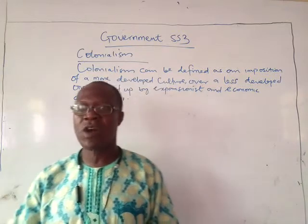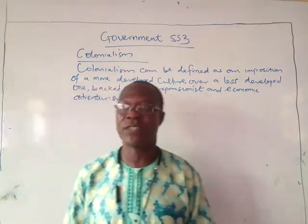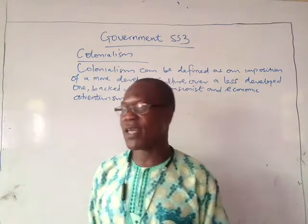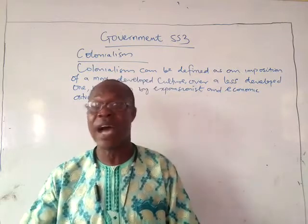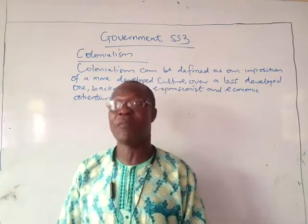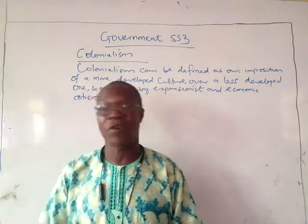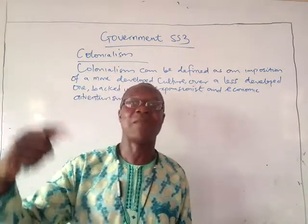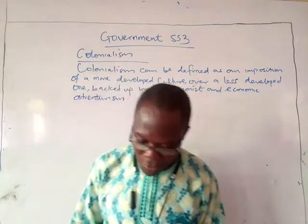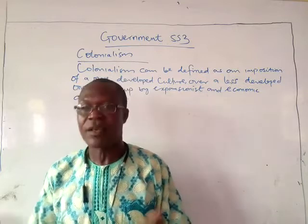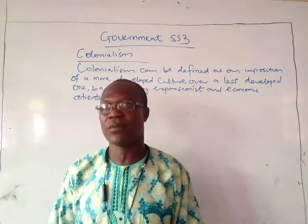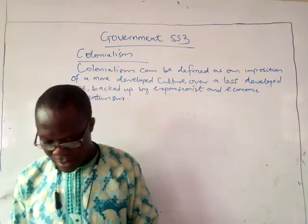Number five: introduction of money, currency, and development of banks. In those days, our ancestors traded among themselves through trade by barter. It was as a result of the coming of the Europeans that we have paper money today, which makes it easier for us to transact business — unlike trade by barter, where you used to carry what you have looking for someone to exchange with. So it removed that distress. Up to today we have paper money, and banks also began to develop, with many banks now in our country.